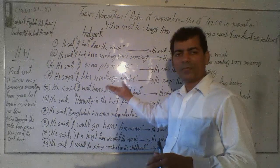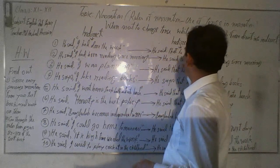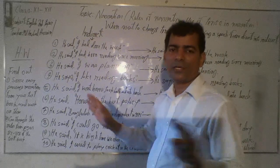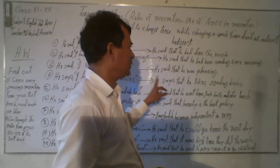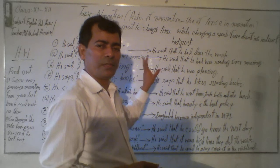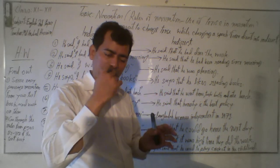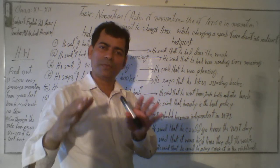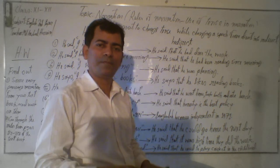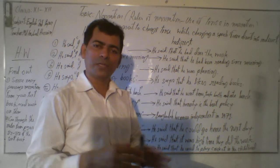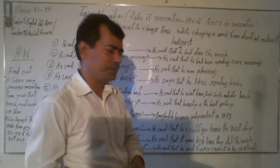For example: 'I had done the work.' When you change this into indirect narration, the tense stays the same. When the tense of a statement within inverted commas is past perfect tense, you don't need to change the tense when converting the speech into indirect narration.